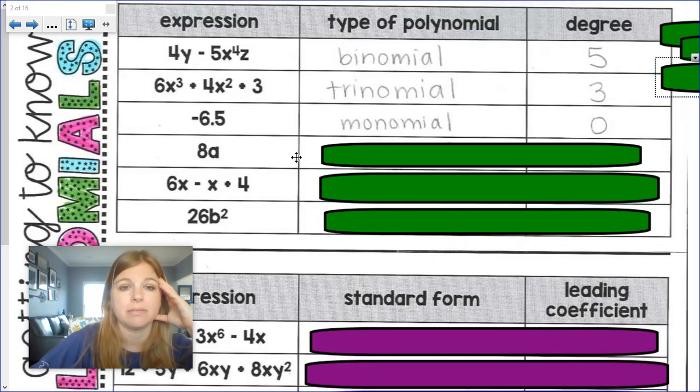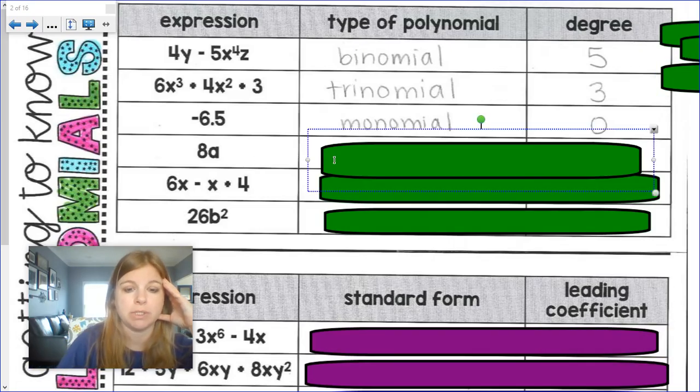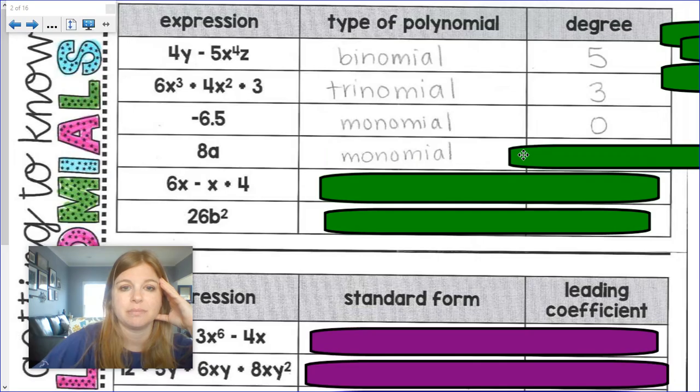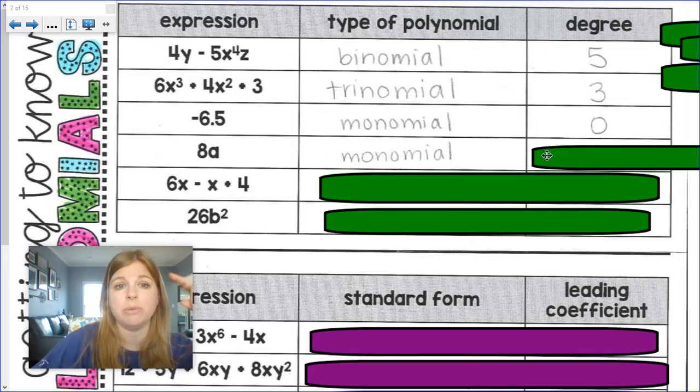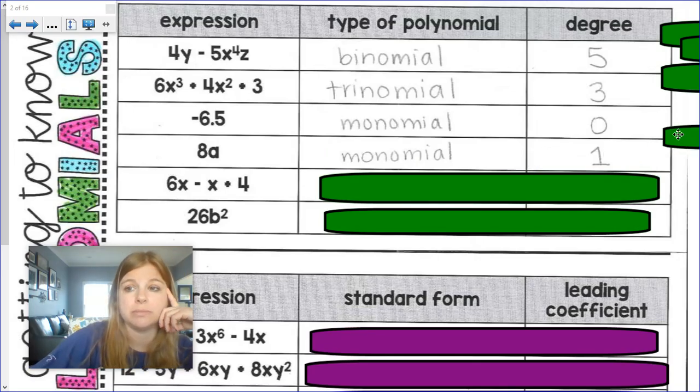8a. One term, so I know this would be a monomial. 8a. A would be to the power of 1. That's my degree.